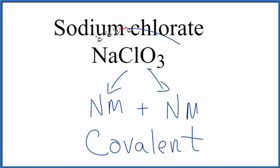Overall, this is an ionic compound because we have the positive sodium ion and the negative chlorate ion attracted to each other. But within the chlorate ion, because it's made up of non-metals, those bonds are covalent.